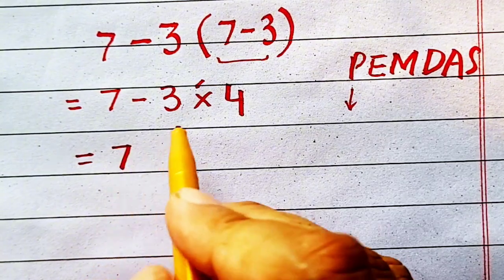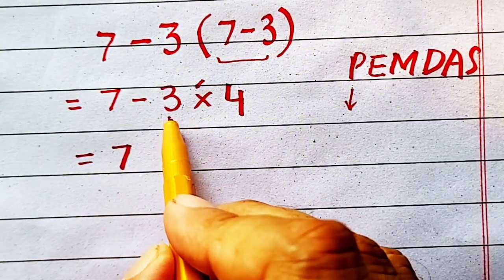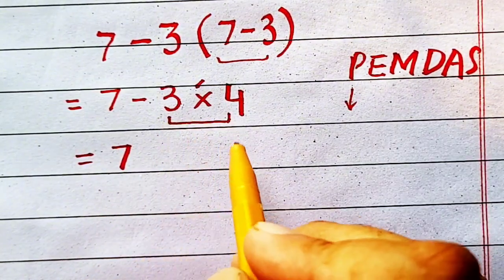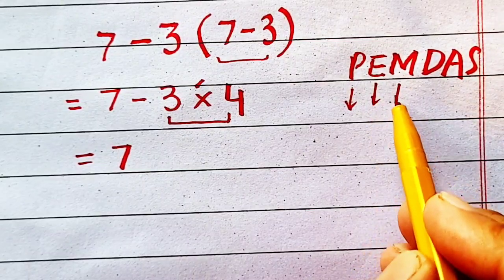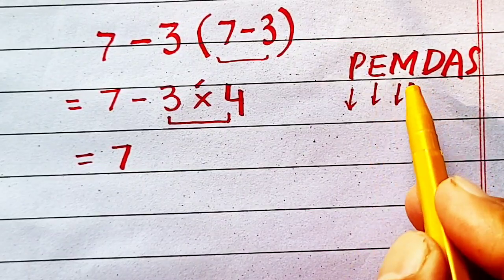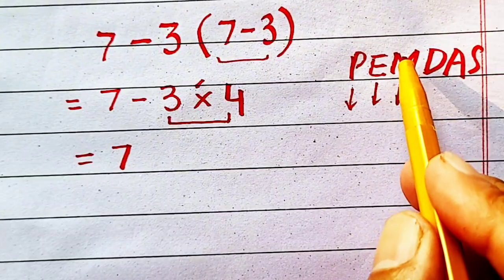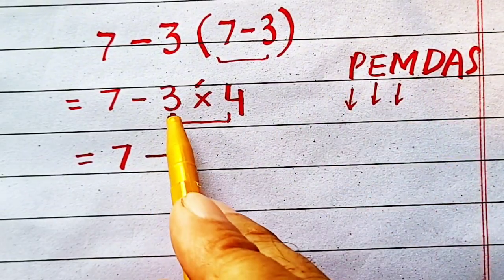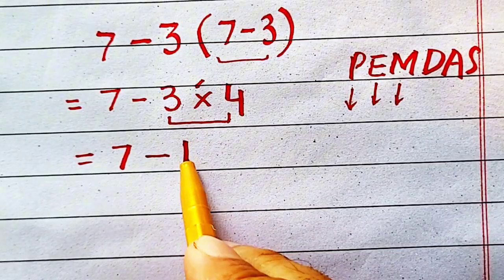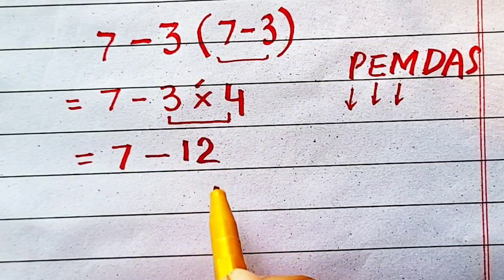So, 7. Now, we will multiply these two terms because in this rule, first multiplication occurs. So, minus 3 multiplied by 4 will be equal to minus 12.